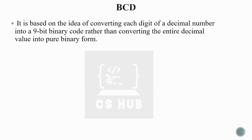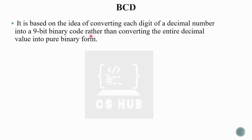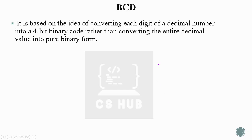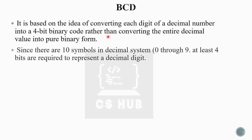BCD is based on the idea of converting each digit of a decimal number into a 4-bit binary code, rather than converting the entire decimal value into a pure binary number. Since there are 10 symbols in the decimal system, we represent each decimal digit using a 4-bit binary code.